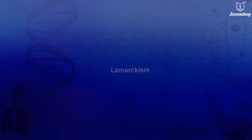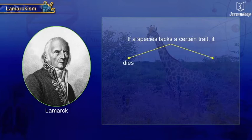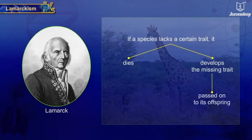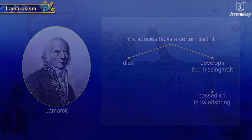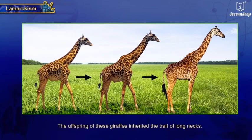Lamarckism: Lamarck incorporated the action of soft inheritance into his evolutionary theories. According to Lamarck, if a species lacks a certain trait that will allow it to survive, either it dies or it develops the missing trait. This developed trait is passed on to its offspring. According to him, the neck of the giraffe became long as a result of continuous stretching in order to reach the leaves high up on trees, and the offspring of these giraffes inherited the trait of long necks.